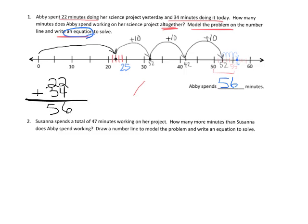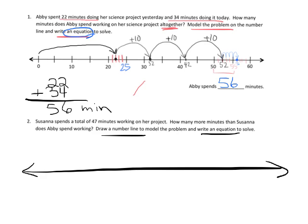Now question two: Susanna spends a total of 47 minutes working on her project. How many more minutes than Susanna does Abby spend working? We're going to plot it on a number line and write an equation. So we're going to start by plotting this on a number line and I'm going to use an empty number line.